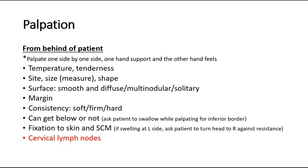We palpate for temperature and any tenderness noted on the patient's face. Then site, size, and shape of the swelling — this confirms our inspection findings. The size should be measured using a measuring tape. Also note the surface, whether it is smooth and diffuse, multinodular, or a solitary nodule. Check the margin and consistency — whether it is soft, firm, or hard. Feel whether we can get below the swelling by asking the patient to swallow again while we palpate for the inferior border.